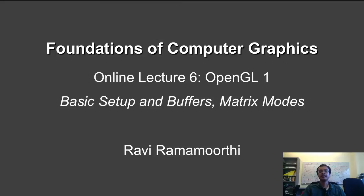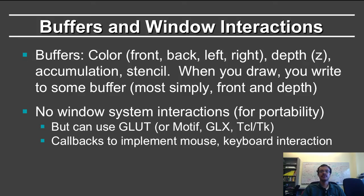We're going to consider the basic setup and the buffers — what is a buffer — as well as basic matrix operations that you already saw for transformations. So the first question is: what is a buffer? In OpenGL, these are some common types of buffer.